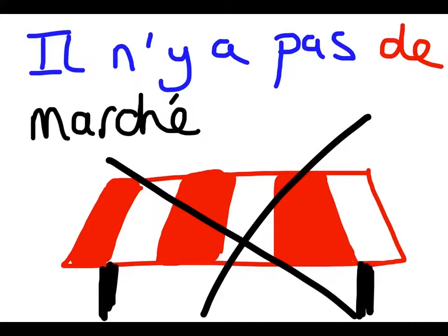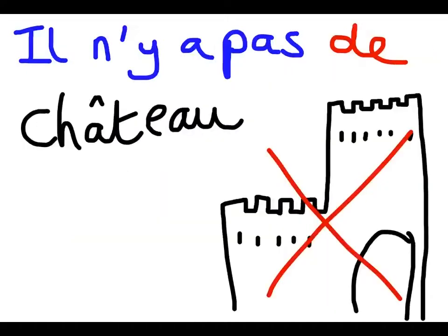The same thing happens again with this example. Il n'y a pas de marché — there is no market. Once again, I've gotten rid of the un from un marché and replaced it with de, and used il n'y a pas to say there is not. And here's one other example: il n'y a pas de château — there is no castle. A castle is un château, but because I'm saying there isn't one, I get rid of the un and replace it with de.